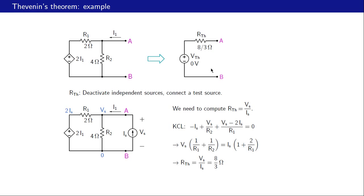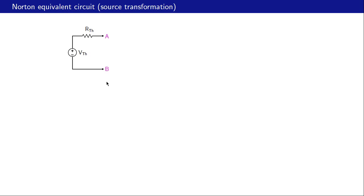Our Thevenin equivalent circuit has Vth equal to zero volts and Rth equal to eight over three ohms. Since Vth is zero volts we may as well replace the voltage source with a short circuit, and therefore all we have between A and B is this resistance Rth equal to eight over three ohms. This circuit is equivalent to the original circuit.